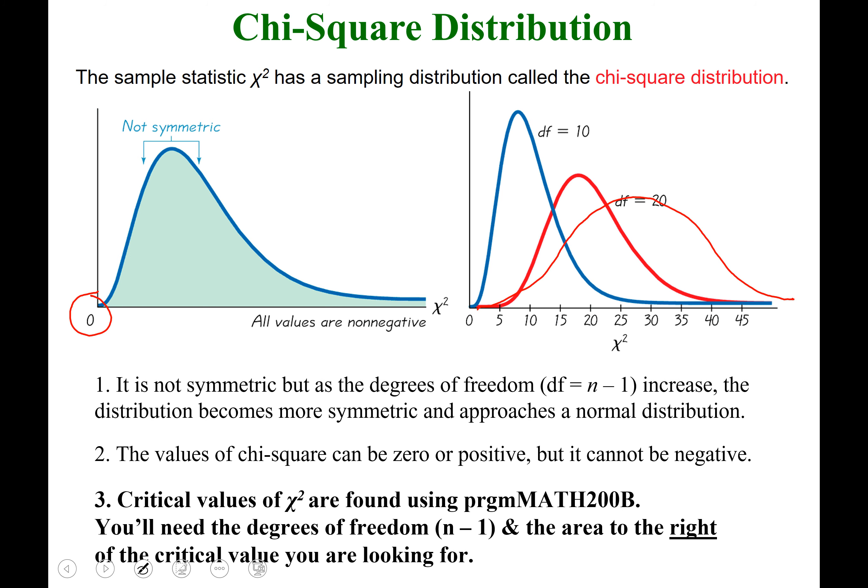Number three, critical values of chi-squared are found using program math 200b. Math 200b requires two inputs: the first is the degrees of freedom, which is your sample size minus one; the second is the area to the right of the critical value you're looking for. This is similar to the student t distribution, except student t required area to the left and degrees of freedom.